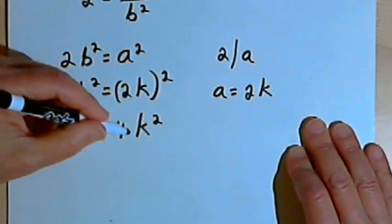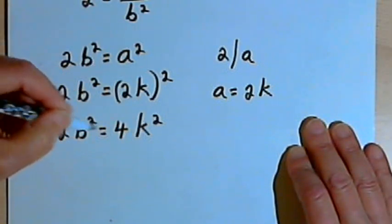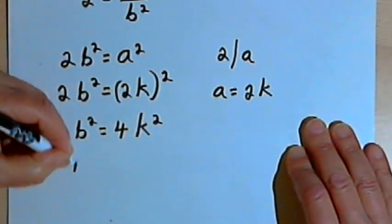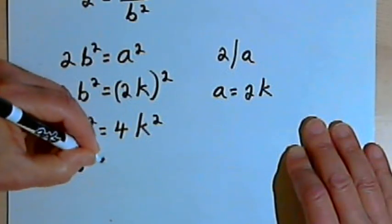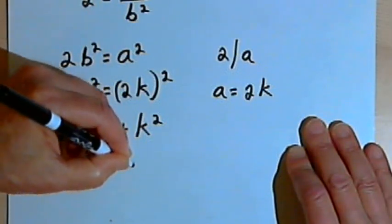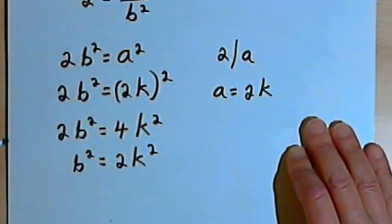And of course I can divide both sides of this equation by 2. And I'm going to get b squared equals 2k squared.